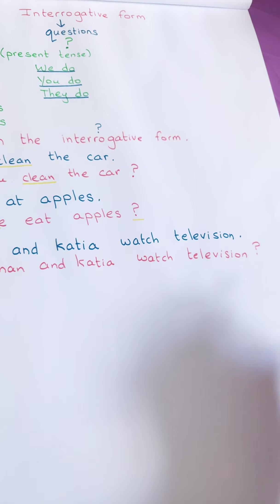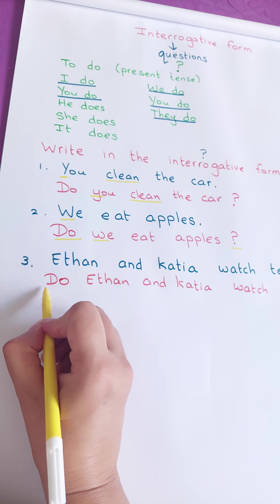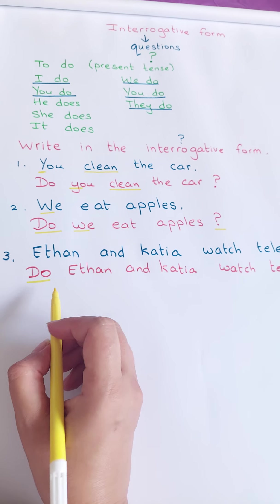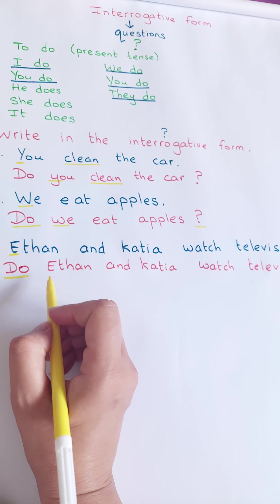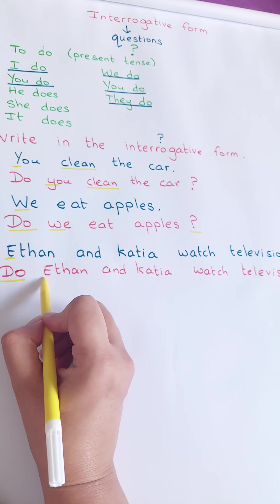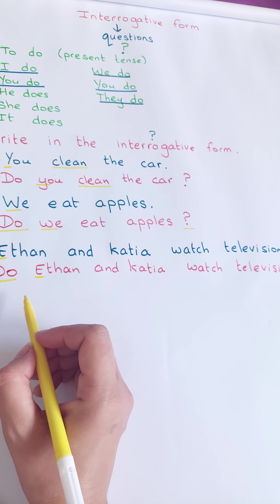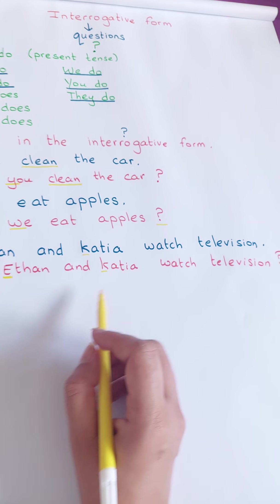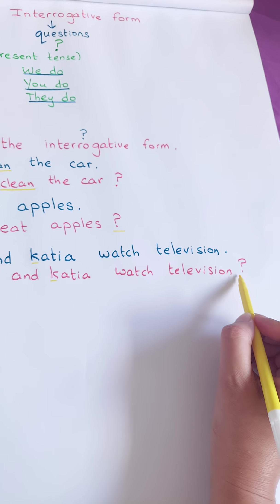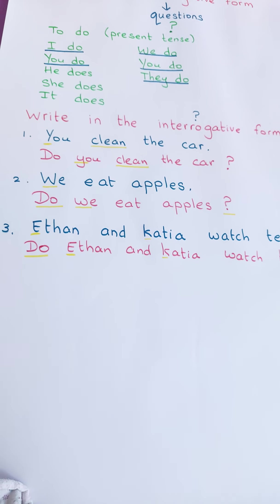Question mark. Donc, ici aussi, je remorque que devant la phrase, j'ai mis do. Mais ici, je vais voir que Ethan, ça commence avec un E, parce que je ne vais pas mettre un petit E. Parce que Ethan, c'est le nom d'un garçon, d'une personne, c'est un nom propre. Katia aussi, c'est un nom propre. Watch television. Et je n'oublie pas de mettre le question mark à la fin. Très bien.